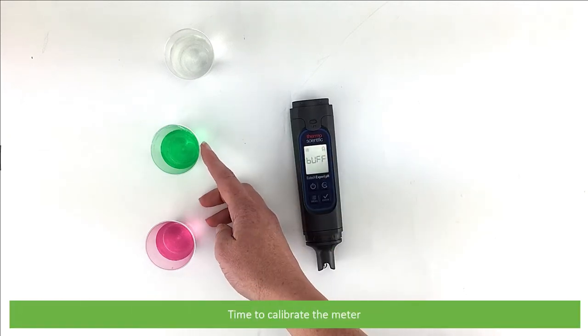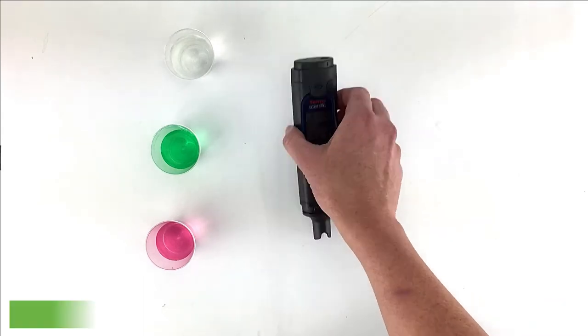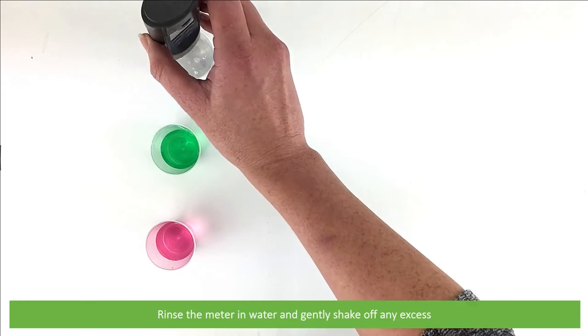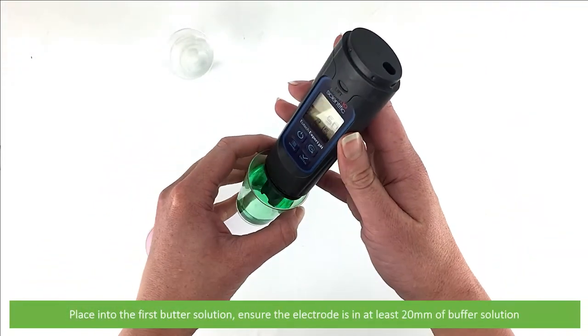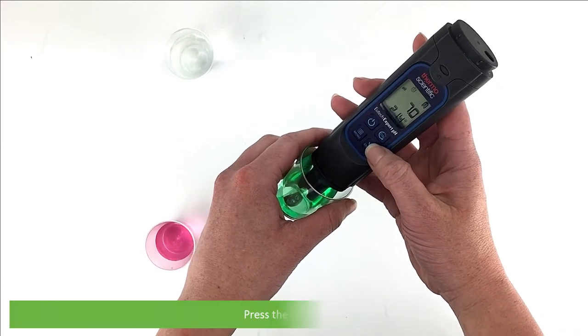Time to calibrate the meter. Rinse the meter in water and gently shake off any excess. Place into the first buffer solution. Ensure that the electrode is in at least 20mm of buffer solution, then press the cal button.